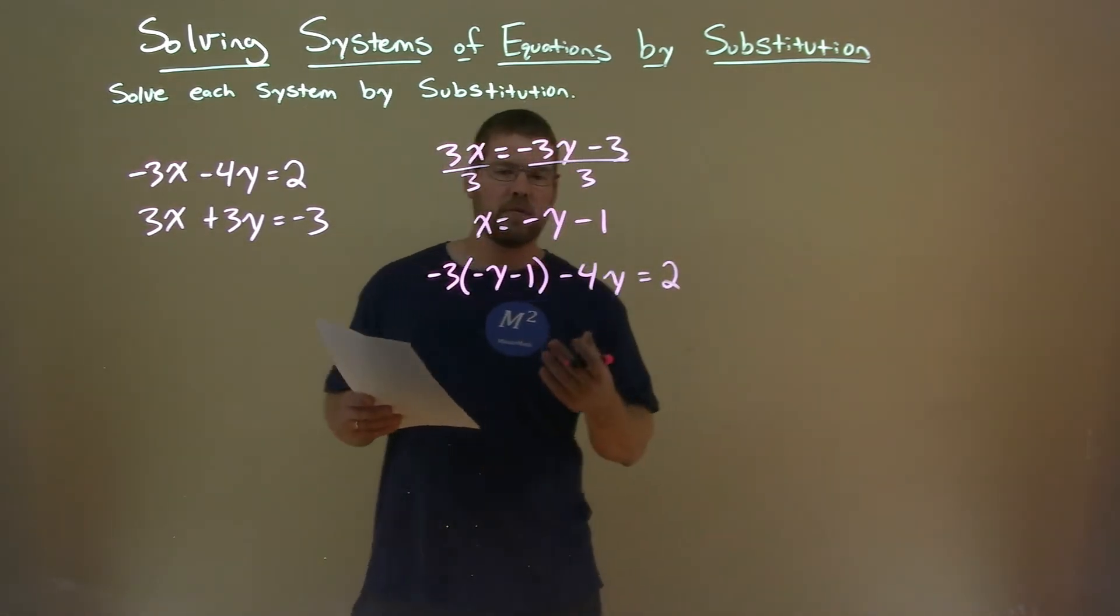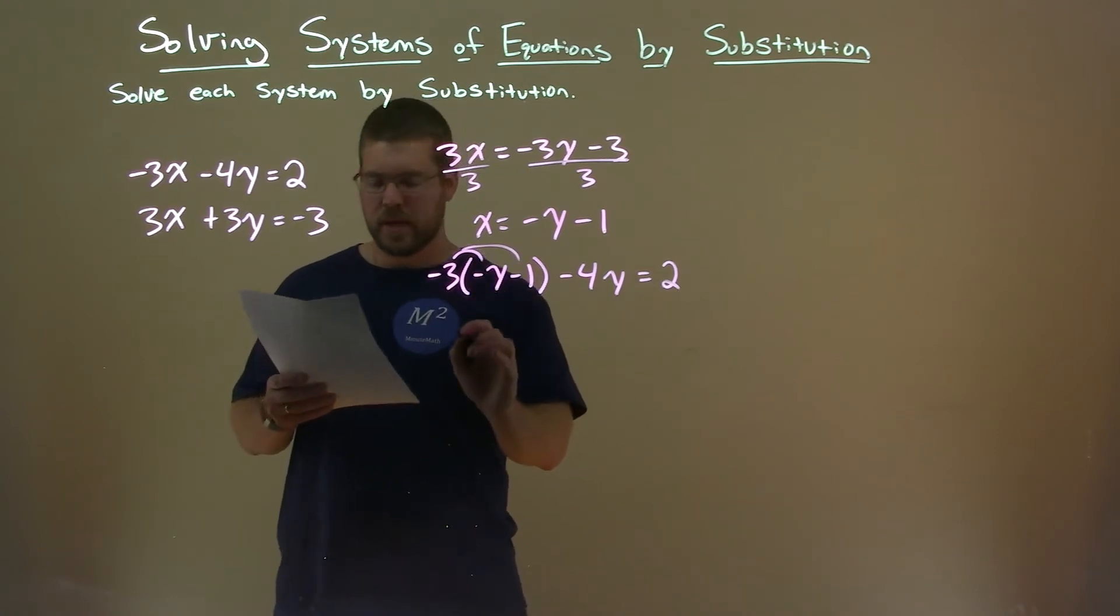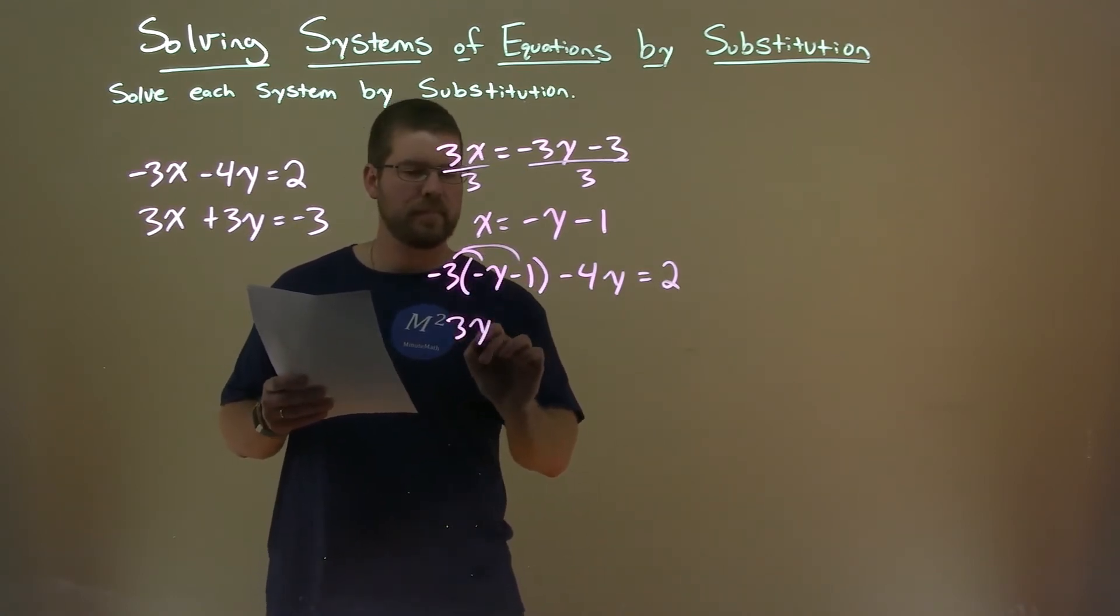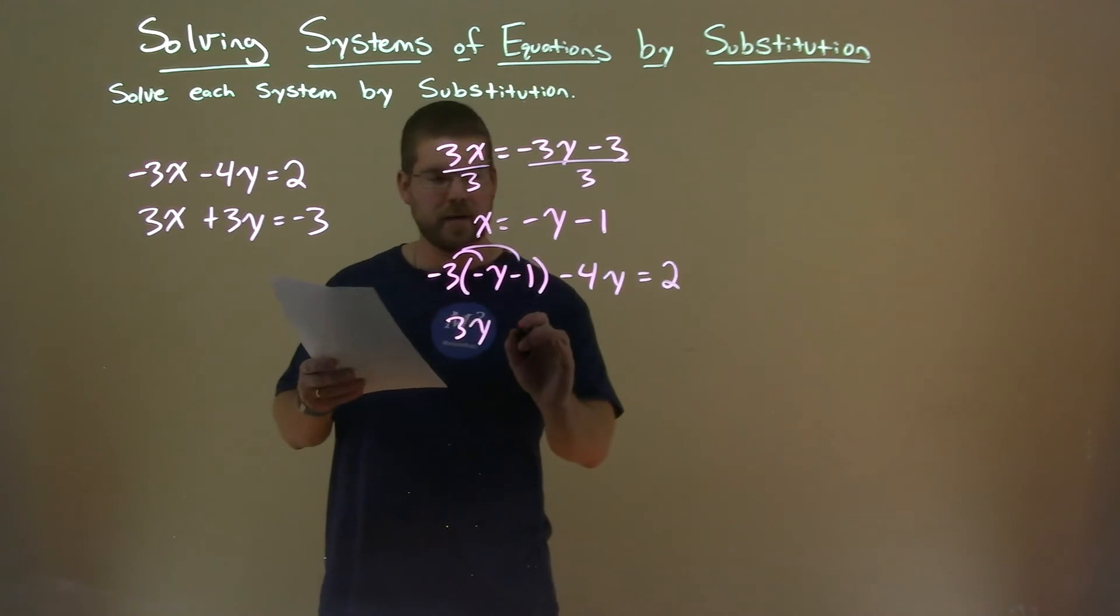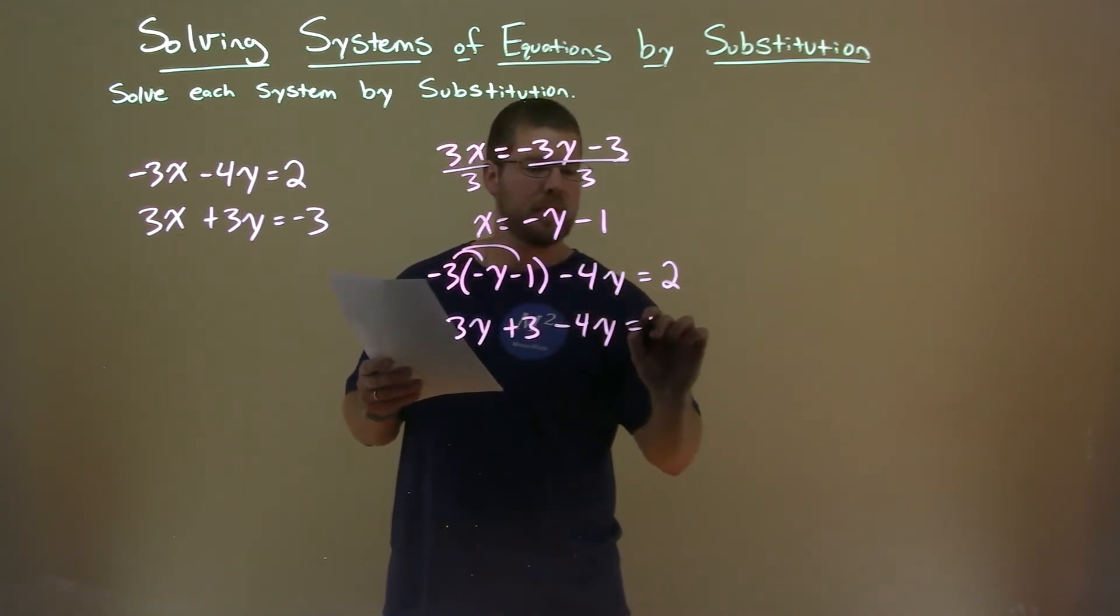So at this point, we're solving for y. Distribute the minus 3 to both parts. Minus 3 times y is positive 3y. Minus 3 times the minus 1 is positive 3. And then minus 4y here equals 2.